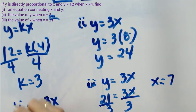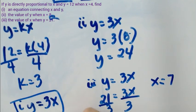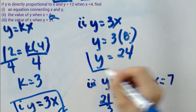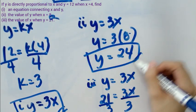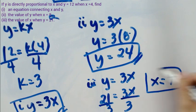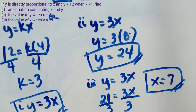So our final answers are: the equation y equals 3x, y equals 24 when x equals 8, and x equals 7 when y equals 21.